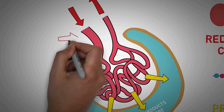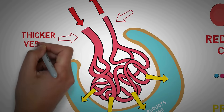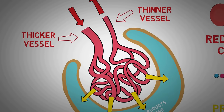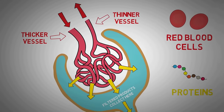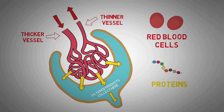An important point is the difference in diameter between the afferent and efferent blood vessels. The efferent vessel has a smaller diameter compared to the afferent vessel, meaning blood comes in through a larger vessel and leaves through a smaller one. This increases pressure inside the glomerulus, providing the driving force that makes filtration possible. The kidneys can adjust the rate of glomerular filtration by adjusting pressure inside the glomerulus, which is possible because the diameters of both vessels can be adjusted.